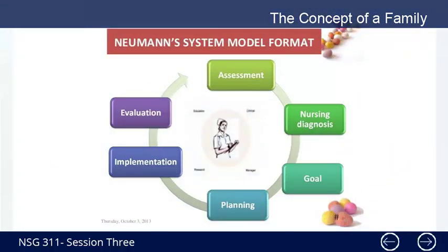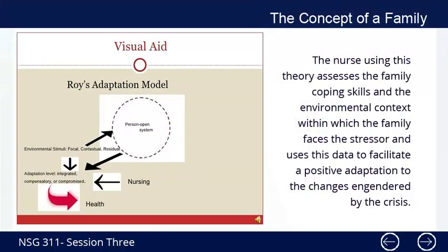The Neuman System Model format includes: Evaluation, Implementation, Planning, Goal, Nursing Diagnosis, and Assessment. B. Roy's Adaptation Model — Roy believes that the family can be a unit of analysis and an adaptive system that is assessed. It involves: enhancement or modification of the focal stimuli; contextual stimuli — all other factors that contribute to behaviors; and residual stimuli — factors that may affect behavior for which effects are not validated.